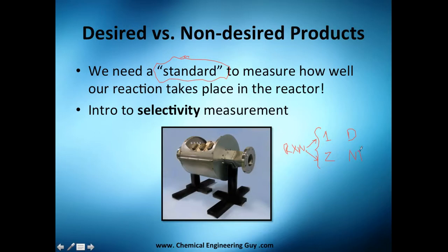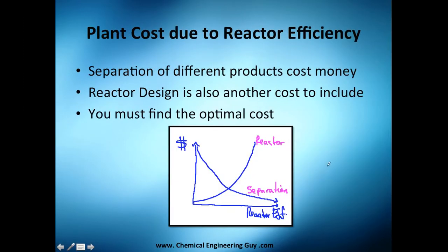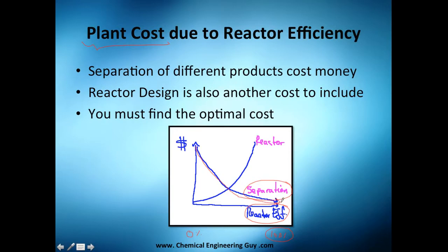Before going further, I want to show you a small diagram of how plant cost is priced depending on reactor efficiency. On this axis, zero percent is the worst conversion and the right end is perfect conversion. If you have a very pure product, you don't need to spend money on separation, so the separation cost curve goes down. But to have a super powerful reactor that gives you 100%, you need to invest a lot of money.